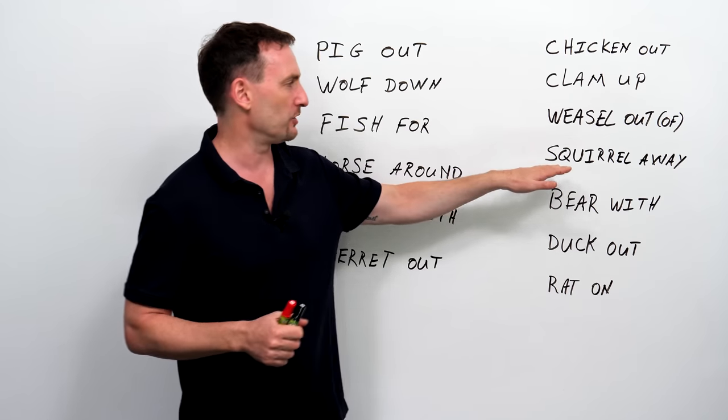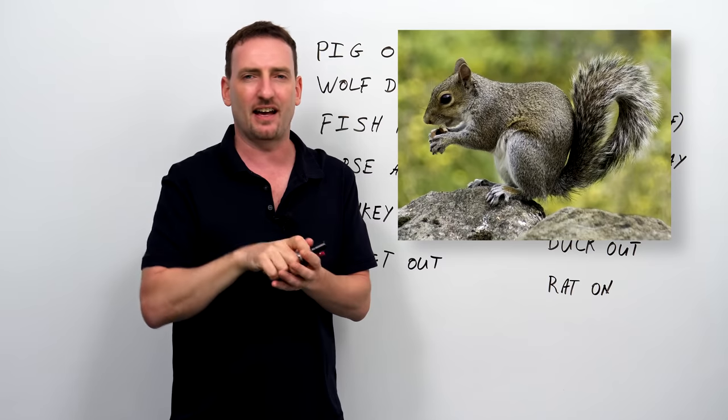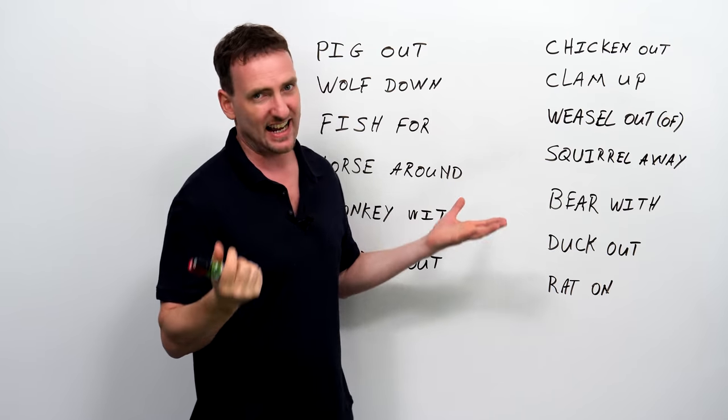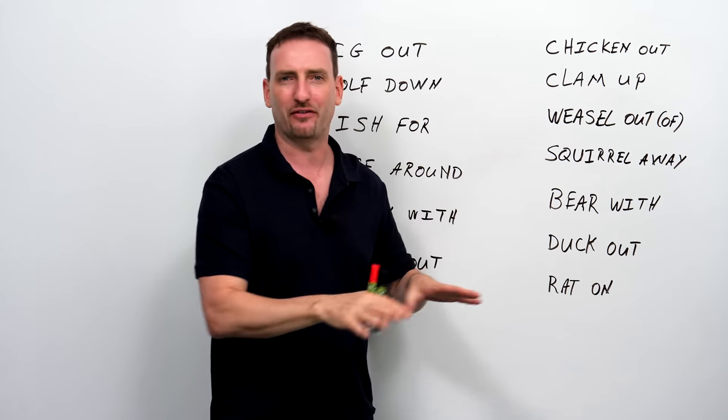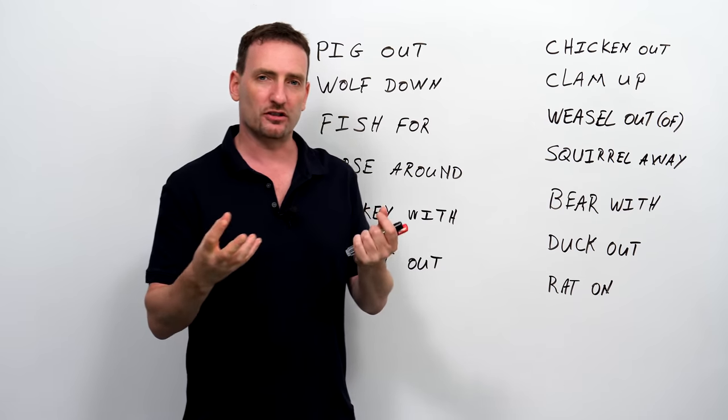Squirrel away. Squirrels also look a little bit like rats, but they have a big tail, very furry, they climb up trees and they eat nuts. In Canada, we have a lot of them, they're kind of cute, but stay away from them, don't go near them, they bite.